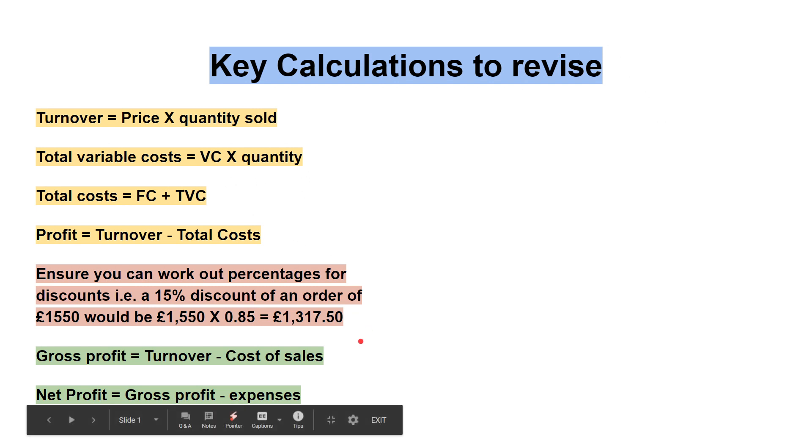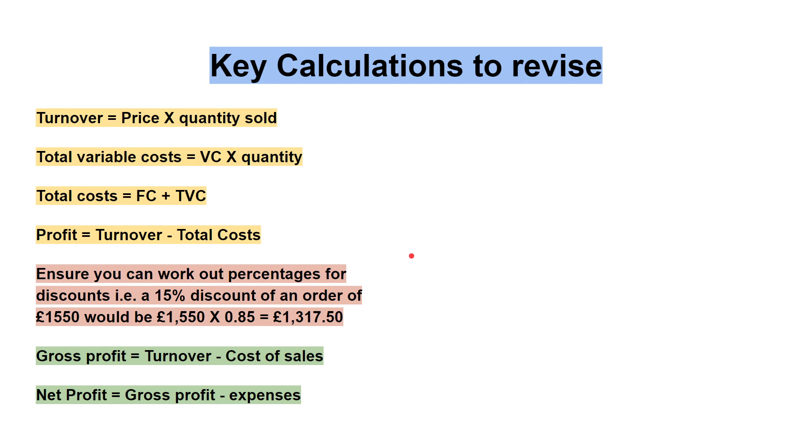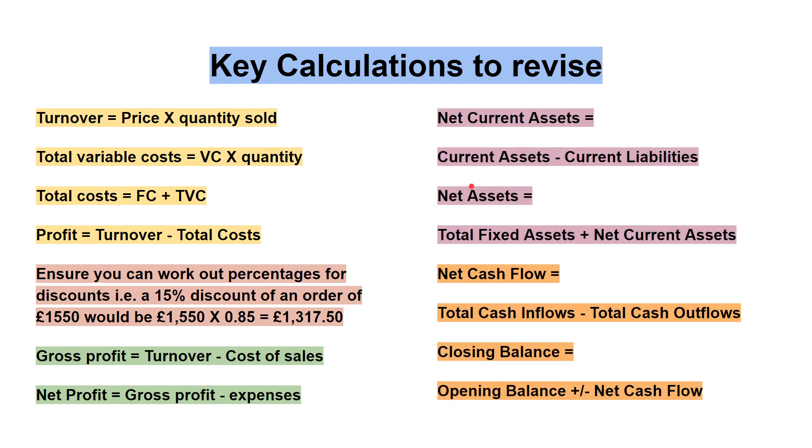Here we've got gross profit and net profit, a really important calculation that's almost certain to be on your paper. Then we've got the statement of financial position, which is your net current assets. This is really important - current assets minus current liabilities.